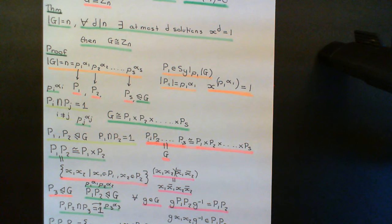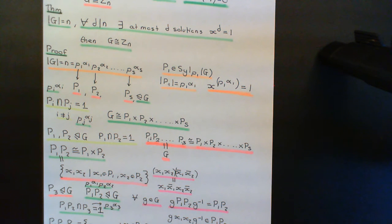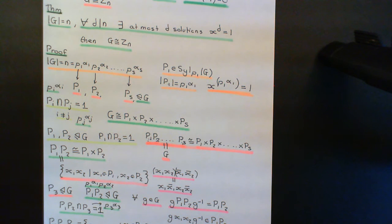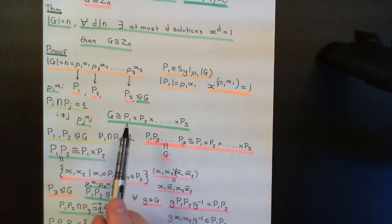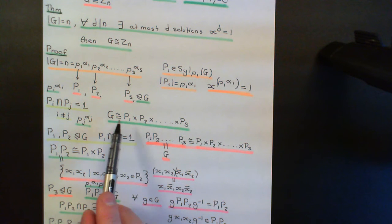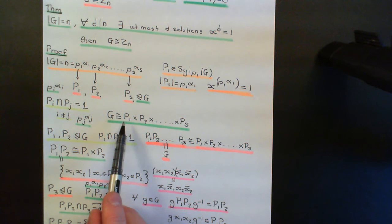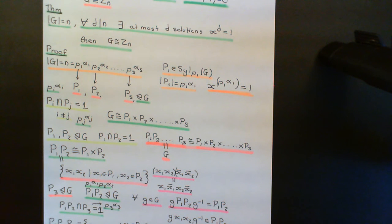What we have discussed is the fact that if you have a finite group obeying this interesting property, it contains one and only one Sylow subgroup for each of the primes that appear in the prime factorization of the order of the group. We have been able to show that the entire group is isomorphic, as far as its algebraic structure is concerned, to the external direct product of all of its Sylow subgroups.